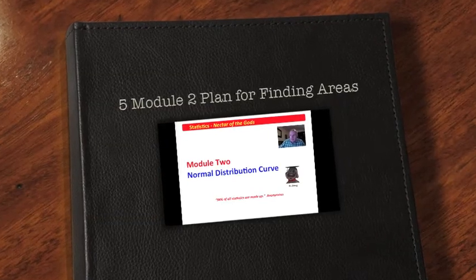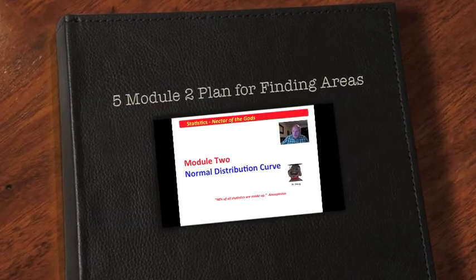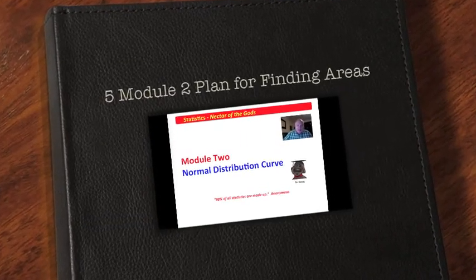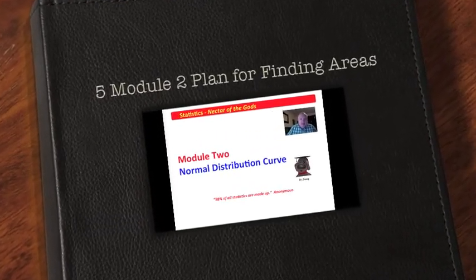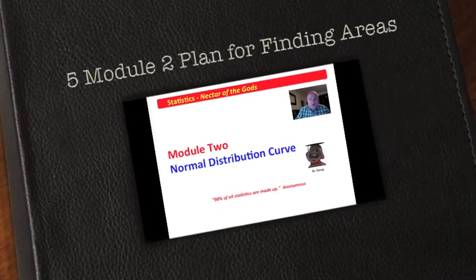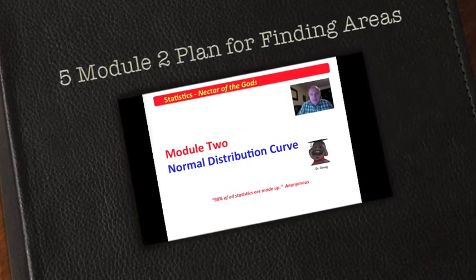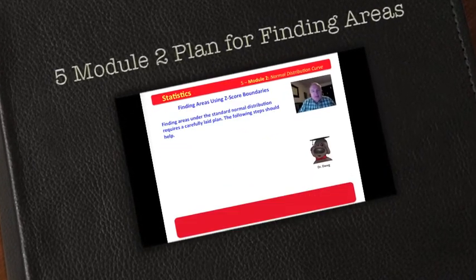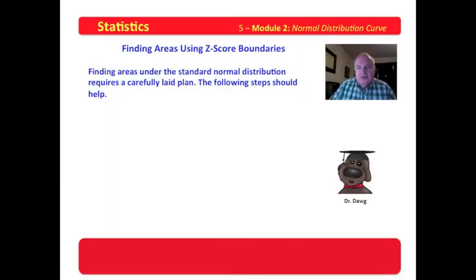Well, hello, my friends. We will continue our journey in learning how to find areas using Z-score boundaries now that we know how to read a Z-score. Finding the areas under the standard normal distribution requires a carefully laid plan, and I'm going to give you some steps that should help.